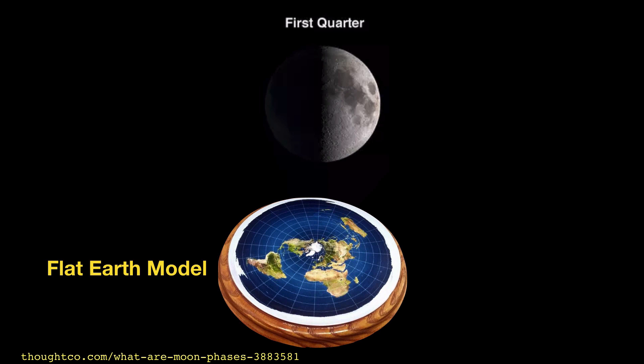Meanwhile, in the flat Earth model, we can't really point out any kind of angles like this, because the moon is not really illuminated by the sun in the flat Earth model, so you can't really make the same angular measurements.